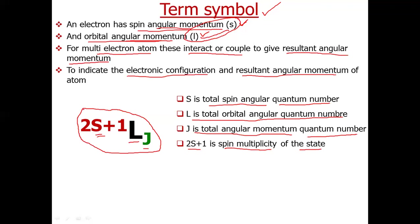In order to find a term symbol, we must know the value of S, the value of L, and the value of J. That is our main topic of interest today: how to calculate capital S, capital L, and capital J. To calculate these values, we just need to know addition — by addition we will get these values.